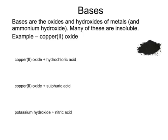Acids can be neutralised by bases. Bases generally are the oxides or the hydroxides of metals. Some bases are soluble — for example, potassium hydroxide or sodium hydroxide — but others are insoluble, such as black copper oxide.